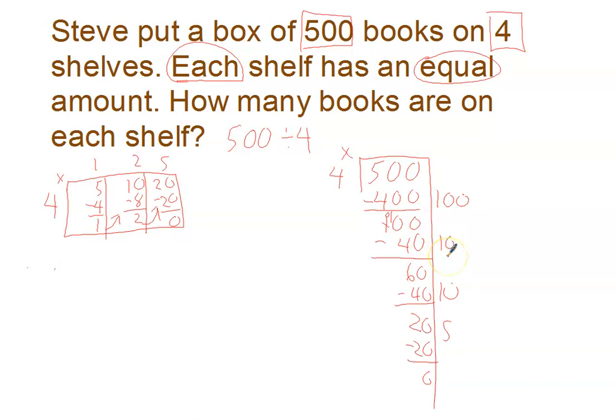So five times four is twenty. And there's nothing left. I add them up. A hundred and ten. A hundred twenty. A hundred and twenty-five. So there are a hundred and twenty-five books on each shelf.